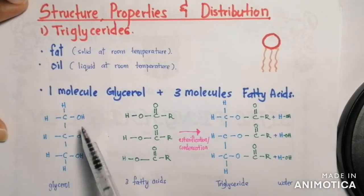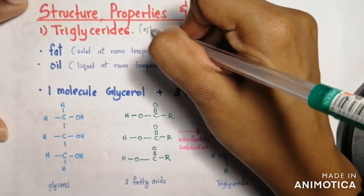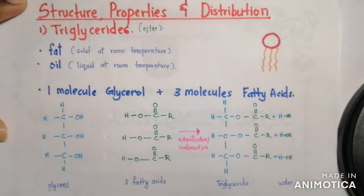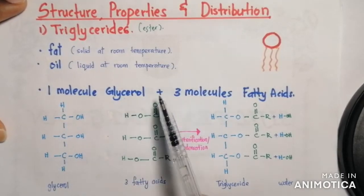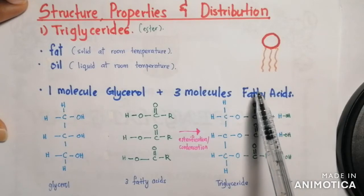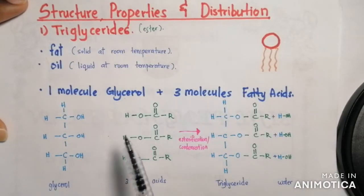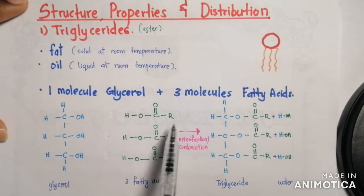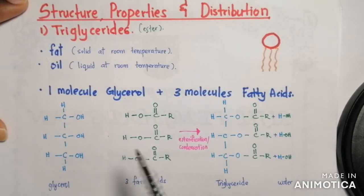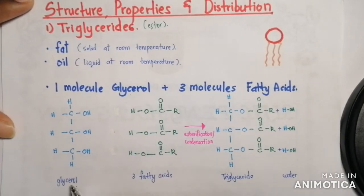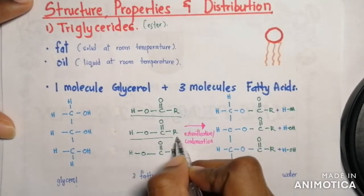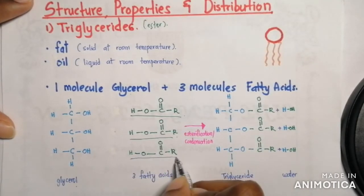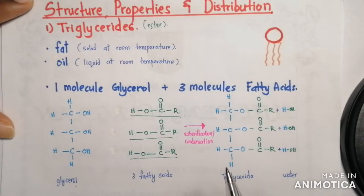We know that a triglyceride is an ester. One molecule of glycerol and three molecules of fatty acids form a triglyceride. Here you have glycerol and here you have three fatty acids — the first, second, and third fatty acid.